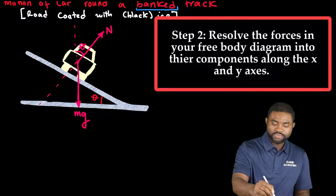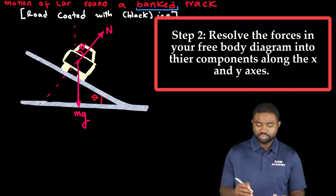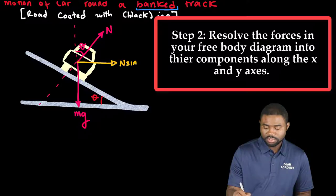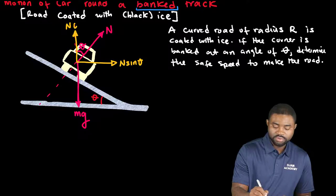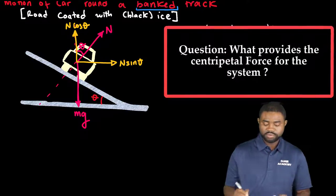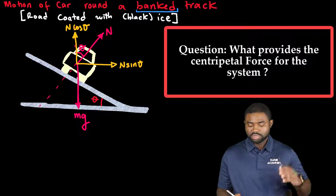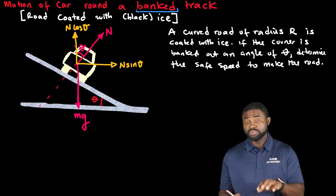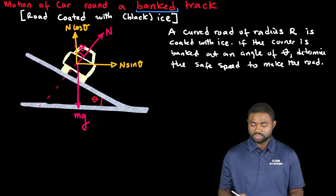So what we can do is, what you can clearly see here, is we can resolve the normal force into two components. You have N sine theta and you have N cosine theta. Now, if you resolve the forces into two components, this essentially tells you that the horizontal component of the normal force provides the centripetal force we need for the car to move around in a banked circular track.